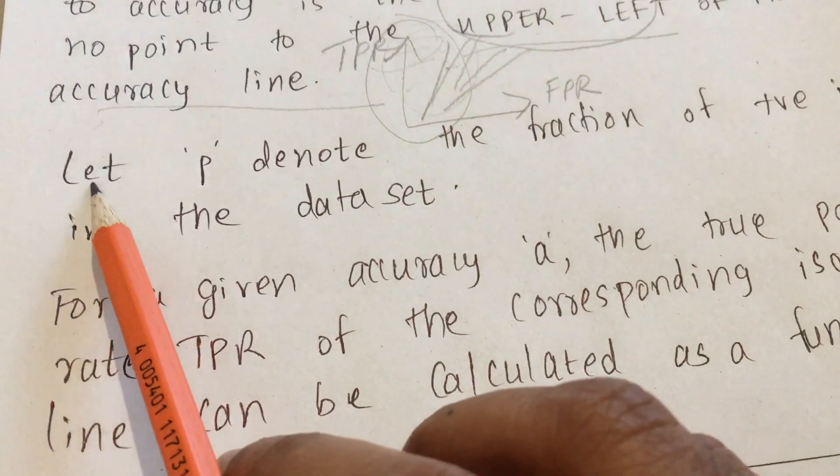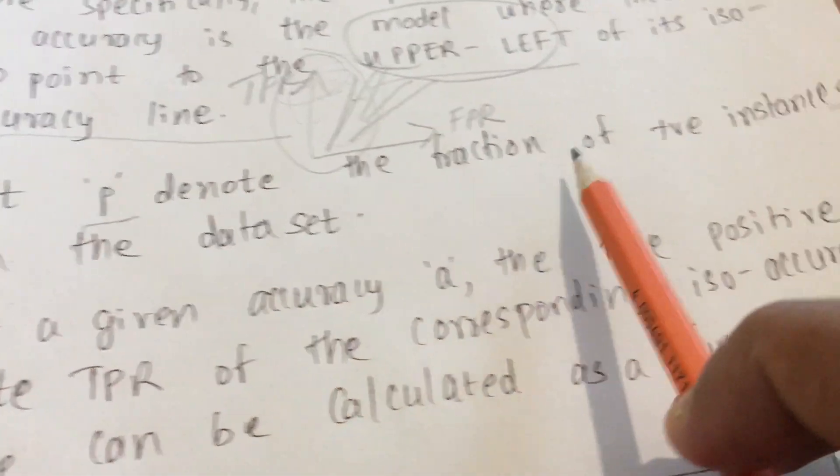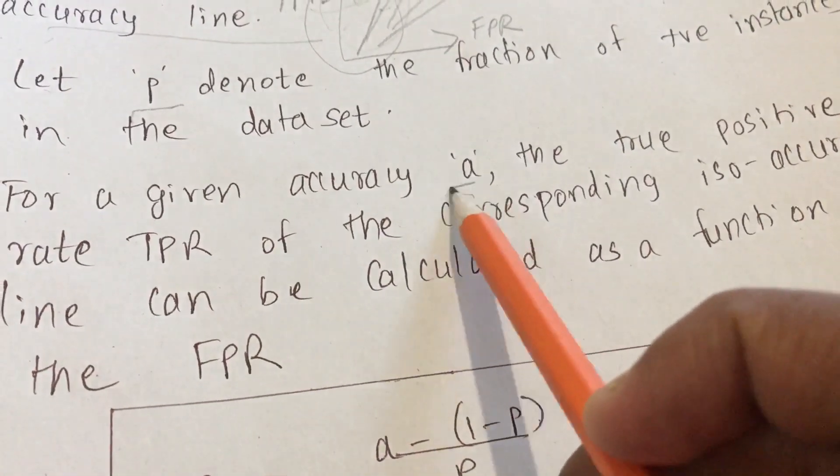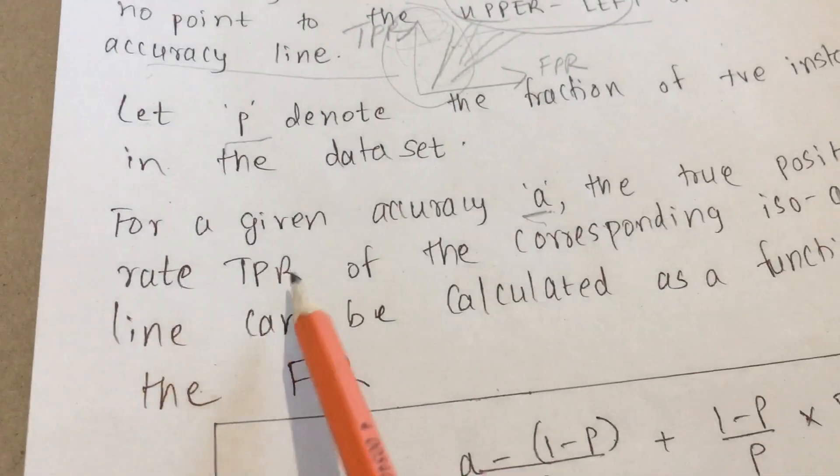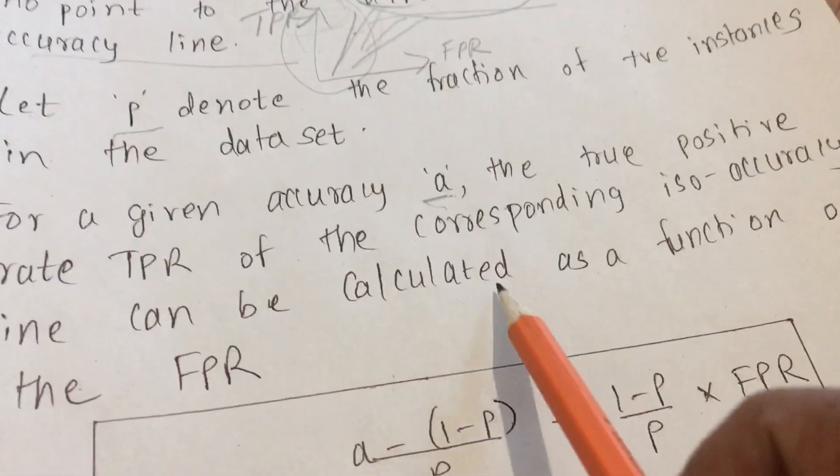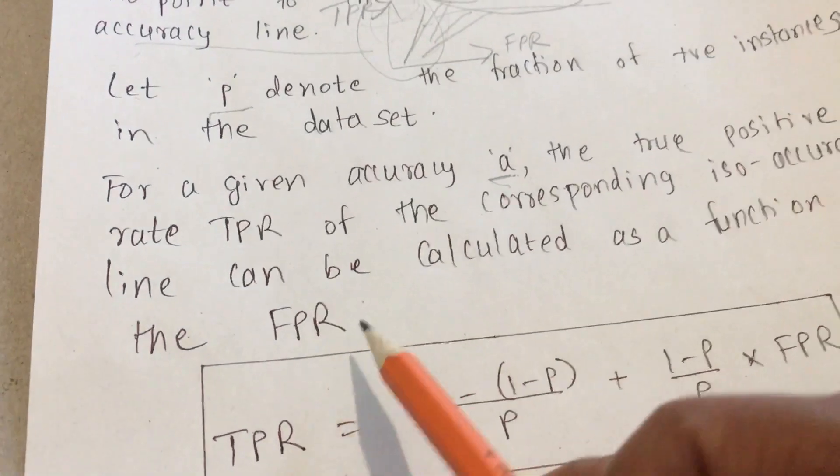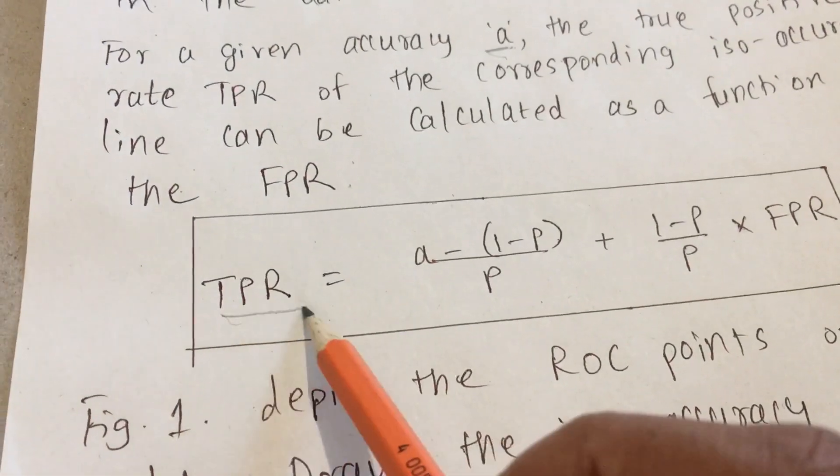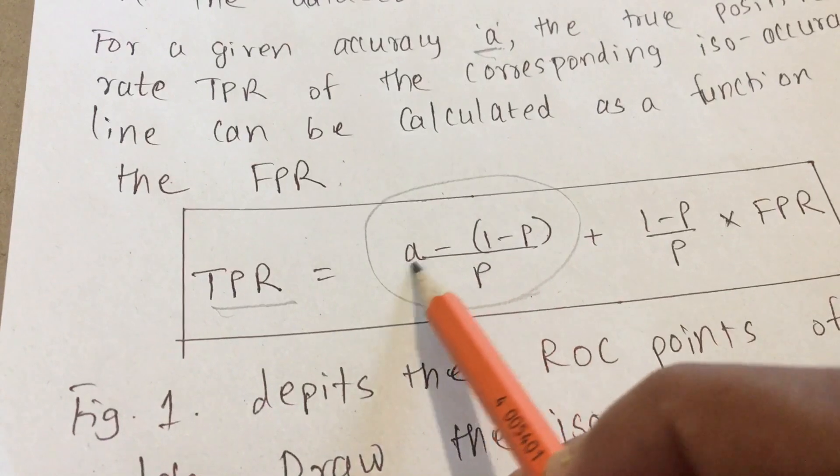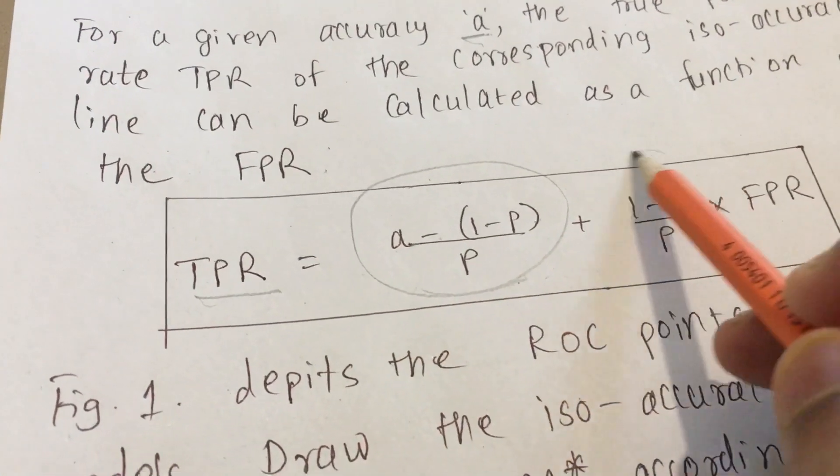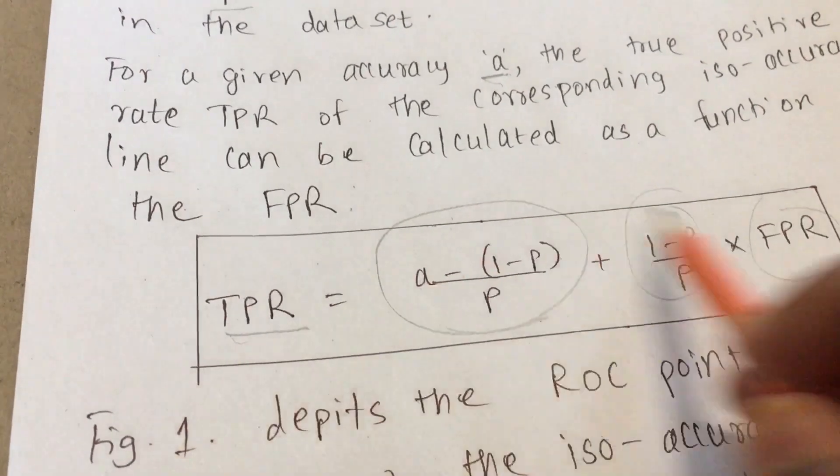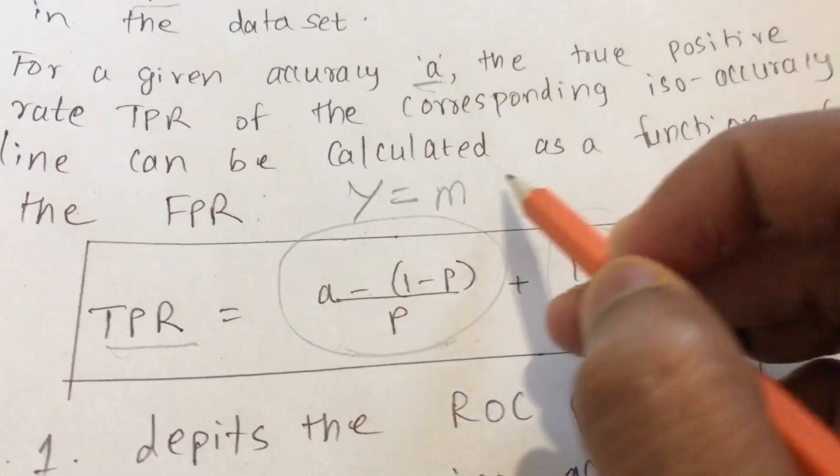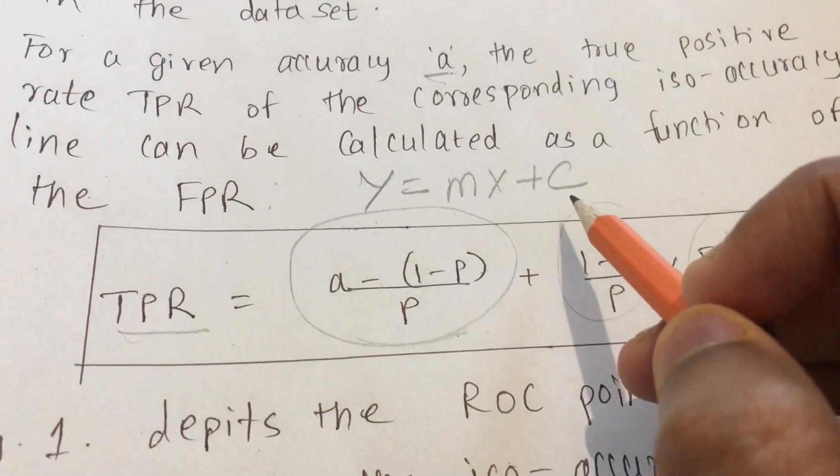Let P denote the fraction of positive instances from the data set, and for a given accuracy A, the true positive rate TPR of the corresponding iso-accuracy line can be calculated as a function of the FPR. This is how the function of iso-accuracy lines is given: TPR equals (A - (1-P))/P plus this portion into FPR. You can see this can be represented as the equation of a line, Y = MX + C, that is slope-intercept form.